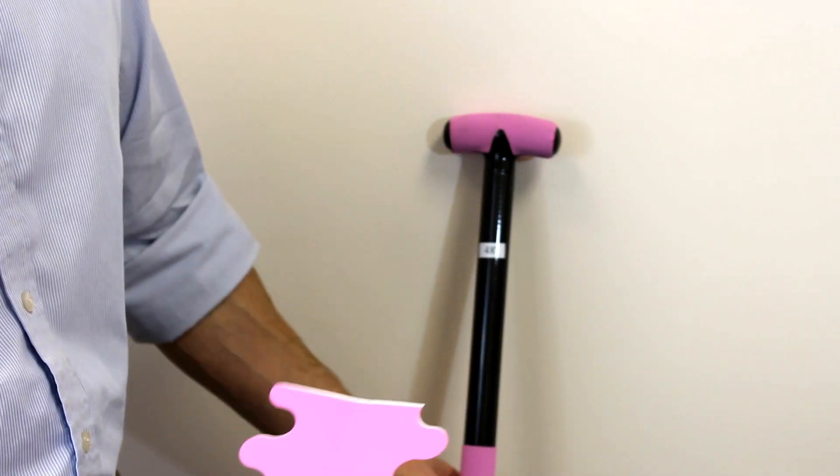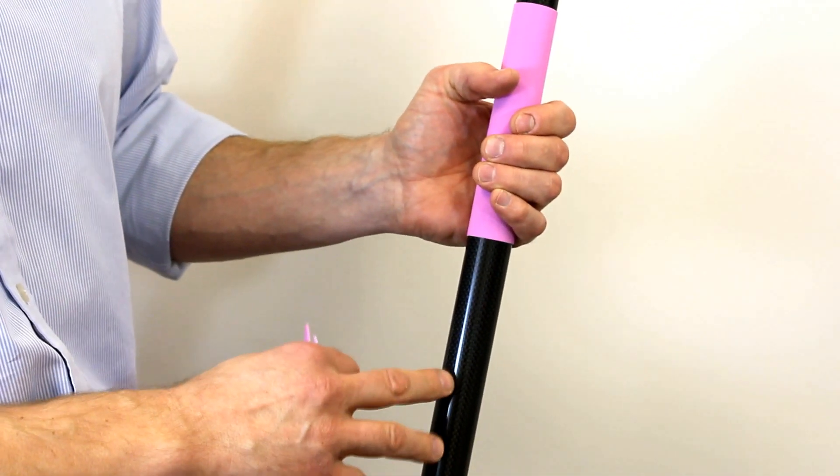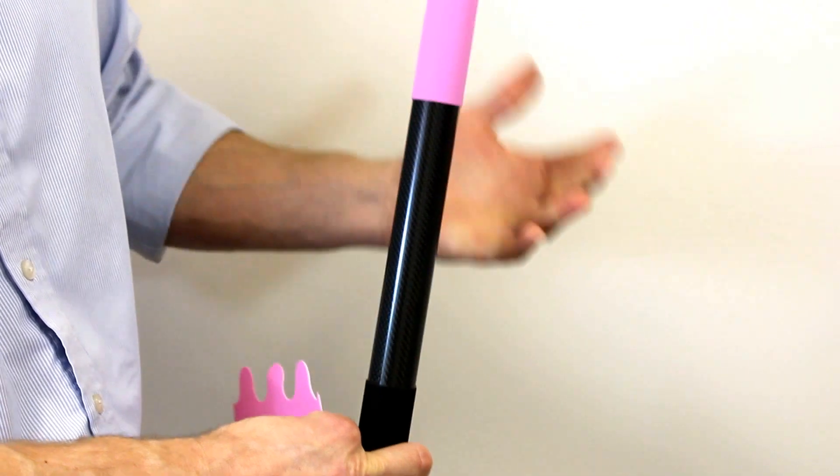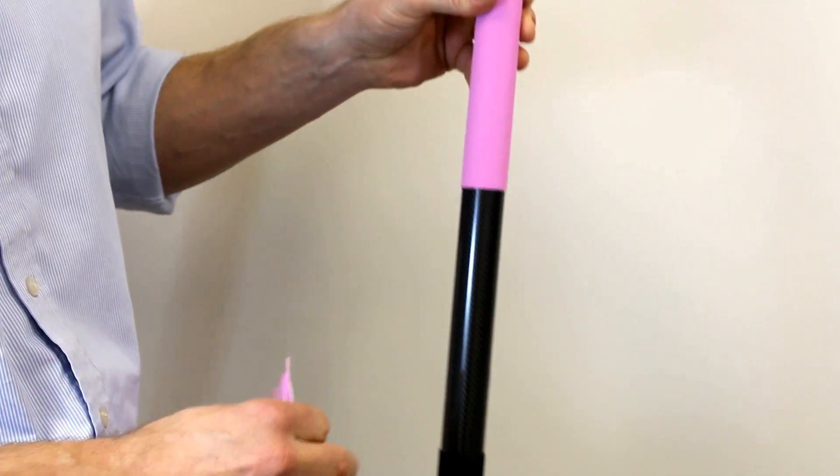So the first thing you want to do is take your paddle and make sure it's clean. Use either a light cleaning solution and make sure that it's clean and free of any dirt or debris.